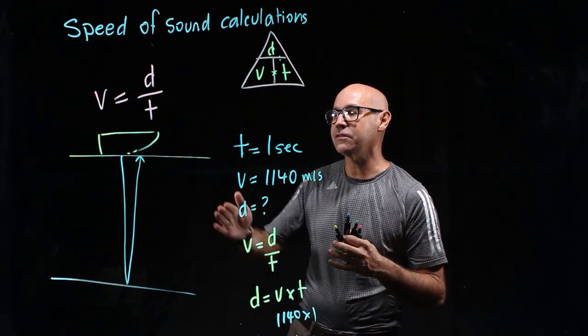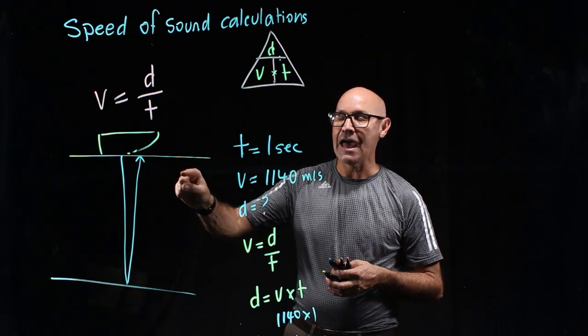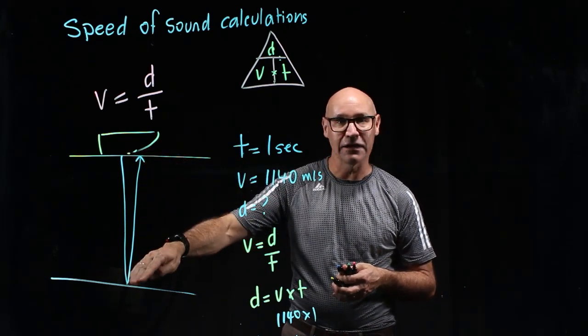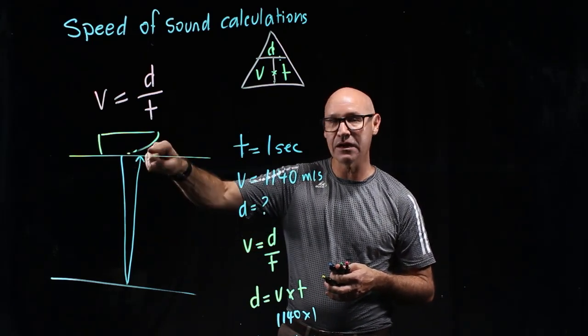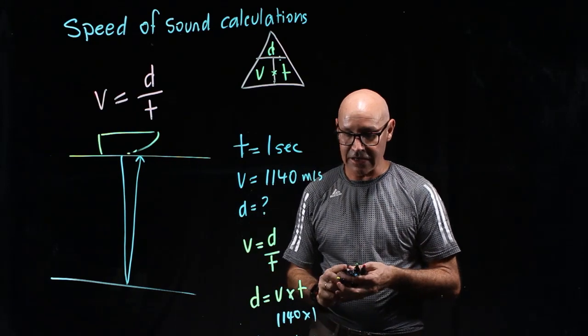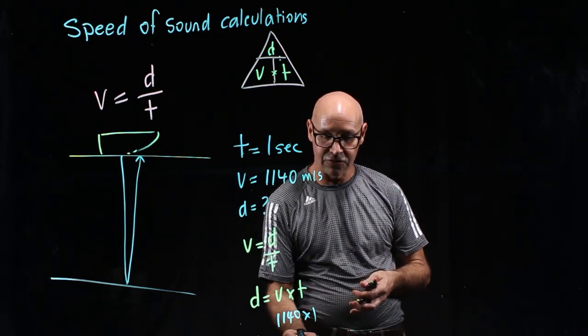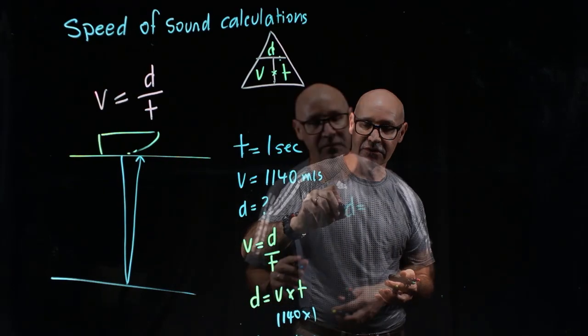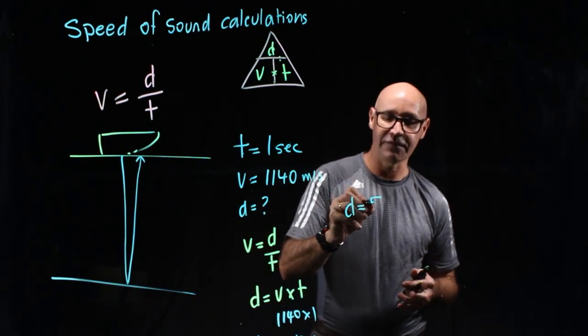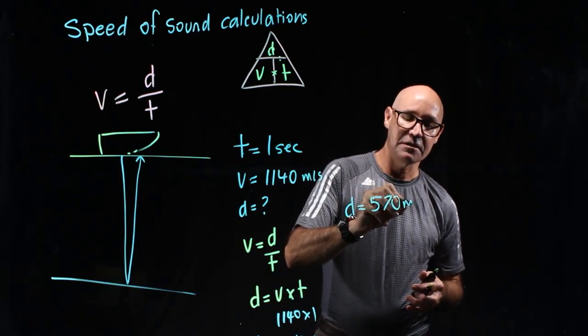The question was asking how deep is the ocean? In other words, how far is it one way? So just down, not down and up, but just down. So we actually need to divide this by two. So our distance is actually 570 meters.